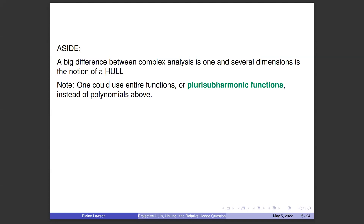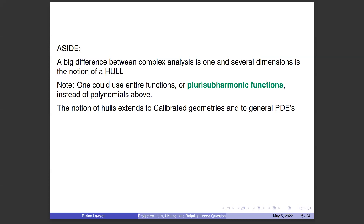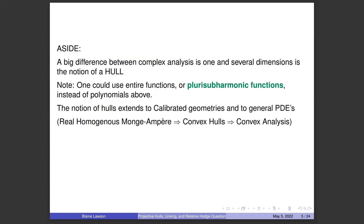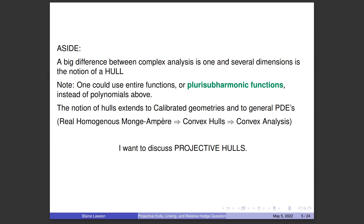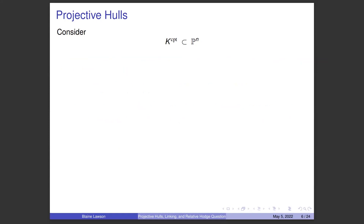When you use plurisubharmonic functions, it's enticing because you can in a very natural way extend the notion of hulls to calibrated geometries in R^N, and to general nonlinear PDEs, and a lot of what one knows in the first case carries over. For example, with the real homogeneous Monge-Ampère equation — where the determinant of the Hessian is zero — the hulls you get in R^N for a compact set are just the usual convex hull, leading to a potential theory that is essentially convex analysis.